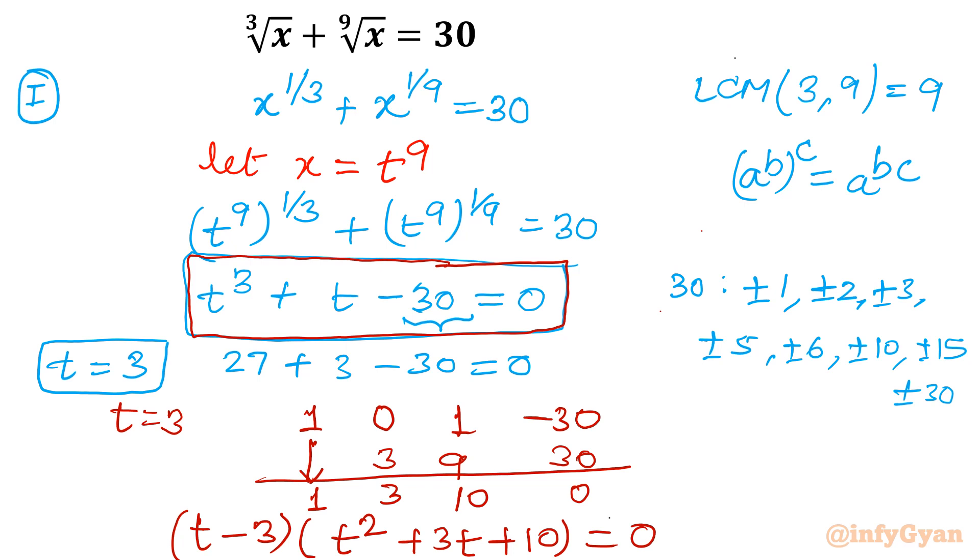Second approach to get quadratic factorization: right now we can solve using splitting of constant term. Let us take that one first. That is second approach: t cube plus t minus 30 equal to 0. So I can split this 30.